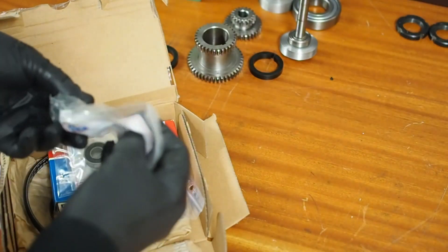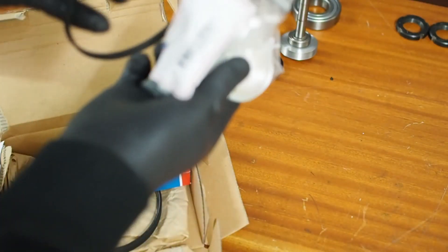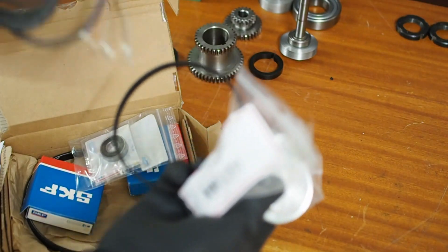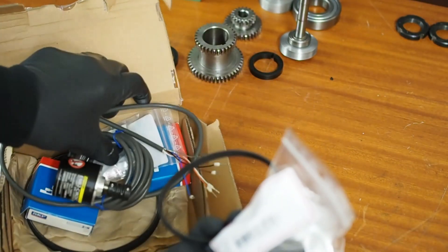So what I've got here, we have a pair of toothed pulleys and their associated toothed belt. Those are going to be used to drive this encoder which we'll get back to later.